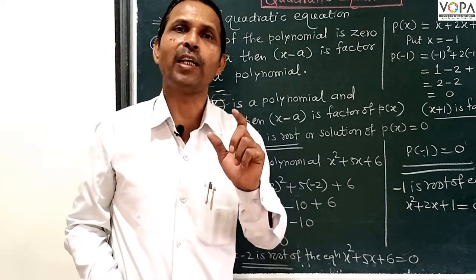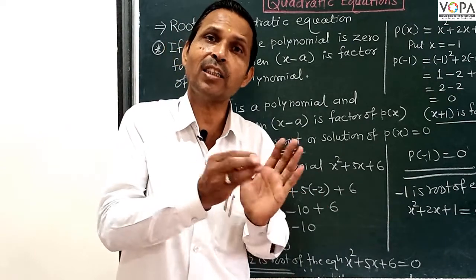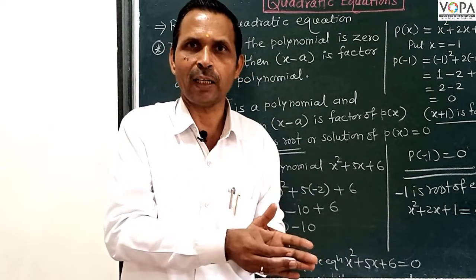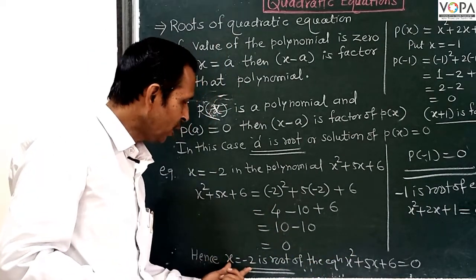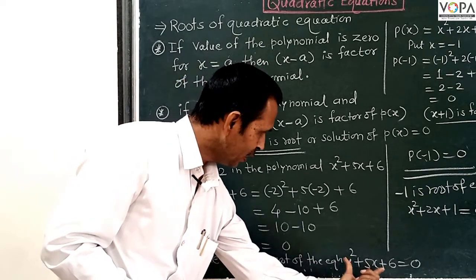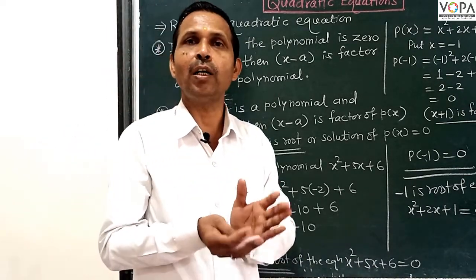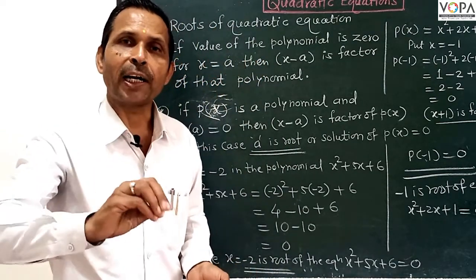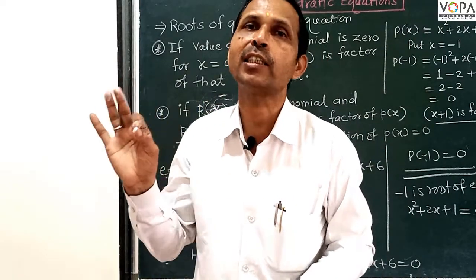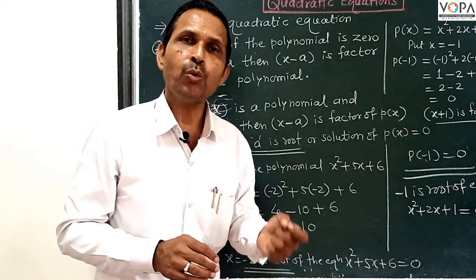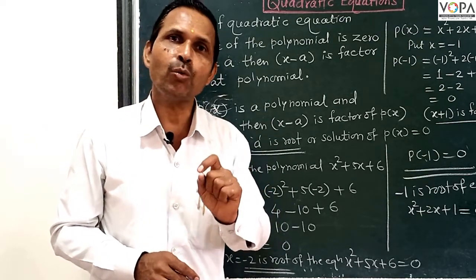If the value of the variable for which the given equation is satisfied — what does 'equation is satisfied' mean? It means if we put the value of that variable into the equation in the LHS, we will get RHS. When the value of LHS equals 0 for that equation, it is called the solution of that equation, and that solution is a root.